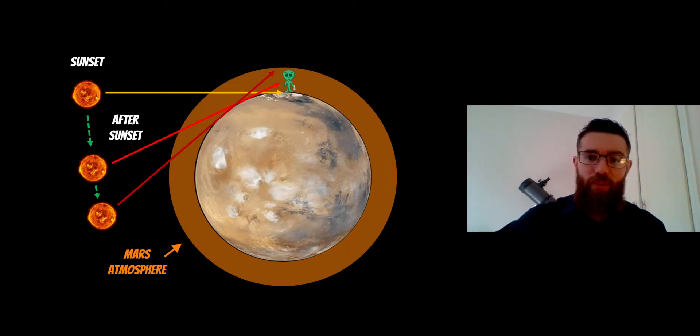You get an illumination of that atmosphere which you can see until it's completely around the other side of the planet, and then you have nice dark skies.